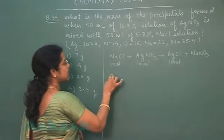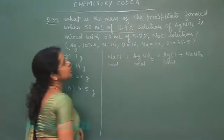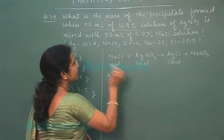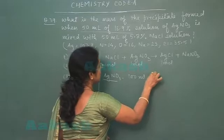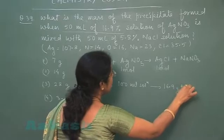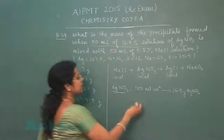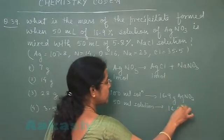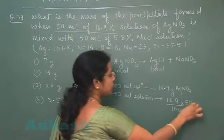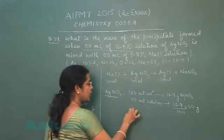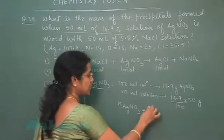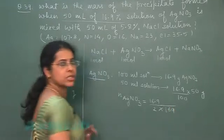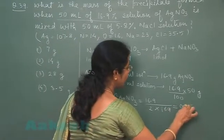Now let us find the given quantities of NaCl and AgNO3. For 50 mL of 16.9% AgNO3 solution: 100 mL of solution contains 16.9 g of AgNO3, so 50 mL contains 16.9/2 g. Converting to moles: (16.9/2) divided by molecular mass 169 gives 0.05 mole of AgNO3.